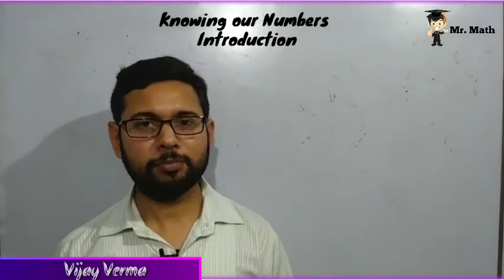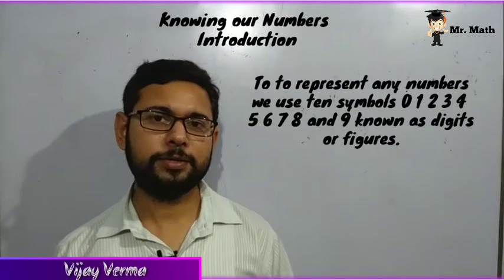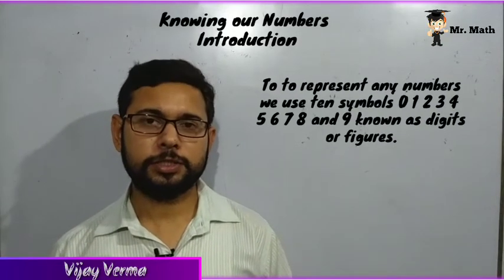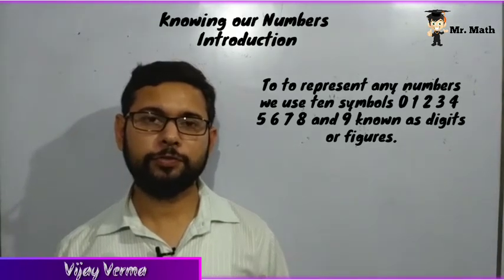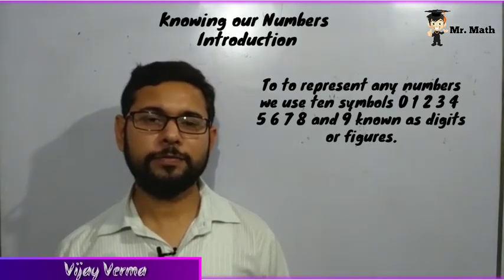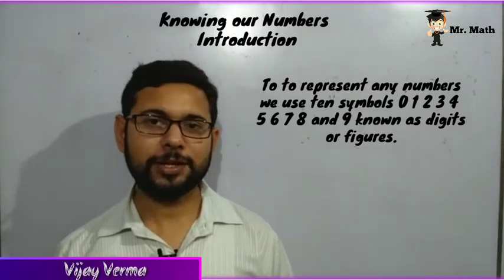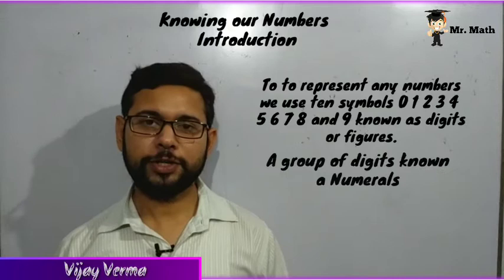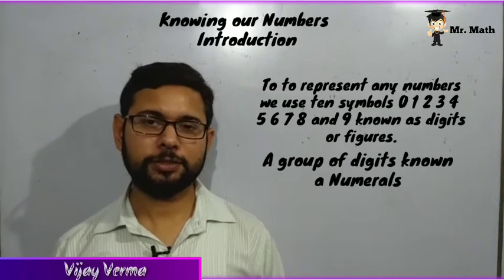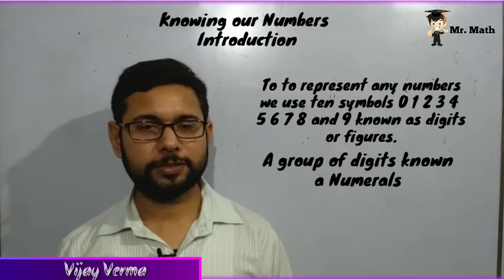To represent any number, we use 10 symbols: 0, 1, 2, 3, 4, 5, 6, 7, 8, 9 — known as digits or figures. A group of digits is known as a numeral.